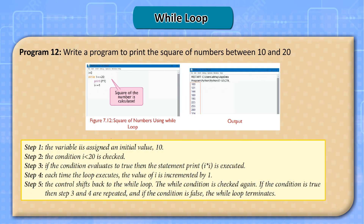Step 5: this process continues till the value of i is less than or equal to 10; the loop terminates once i becomes greater than 10. Program 12: write a program to print the square of numbers between 10 and 20. Step 1: the variable is assigned an initial value of 10. Step 2: the condition i less than 20 is checked. Step 3: if the condition is true, the print statement is executed.